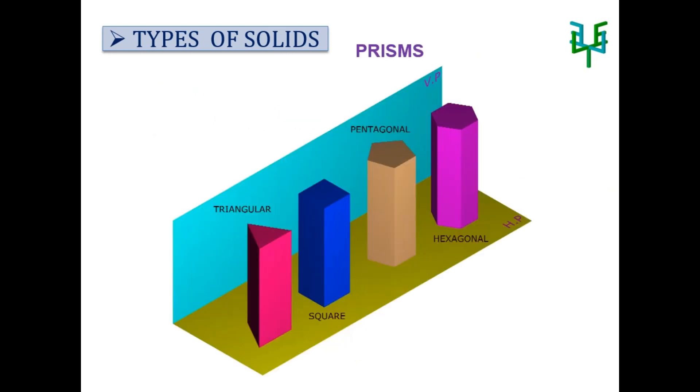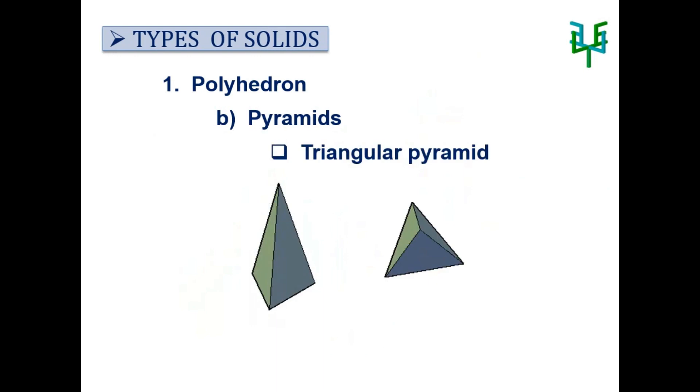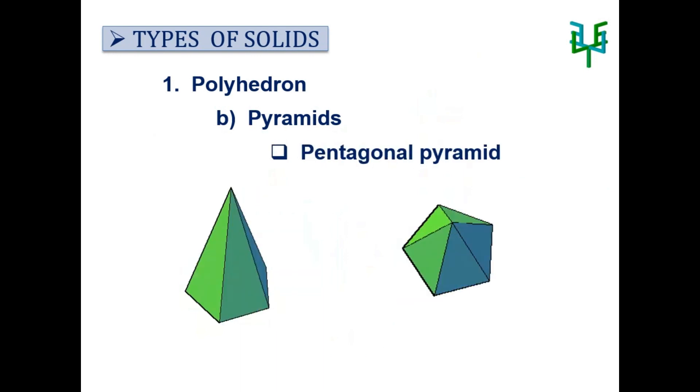Under the pyramids, we have triangular pyramid, square pyramid, pentagonal pyramid, and hexagonal pyramid.